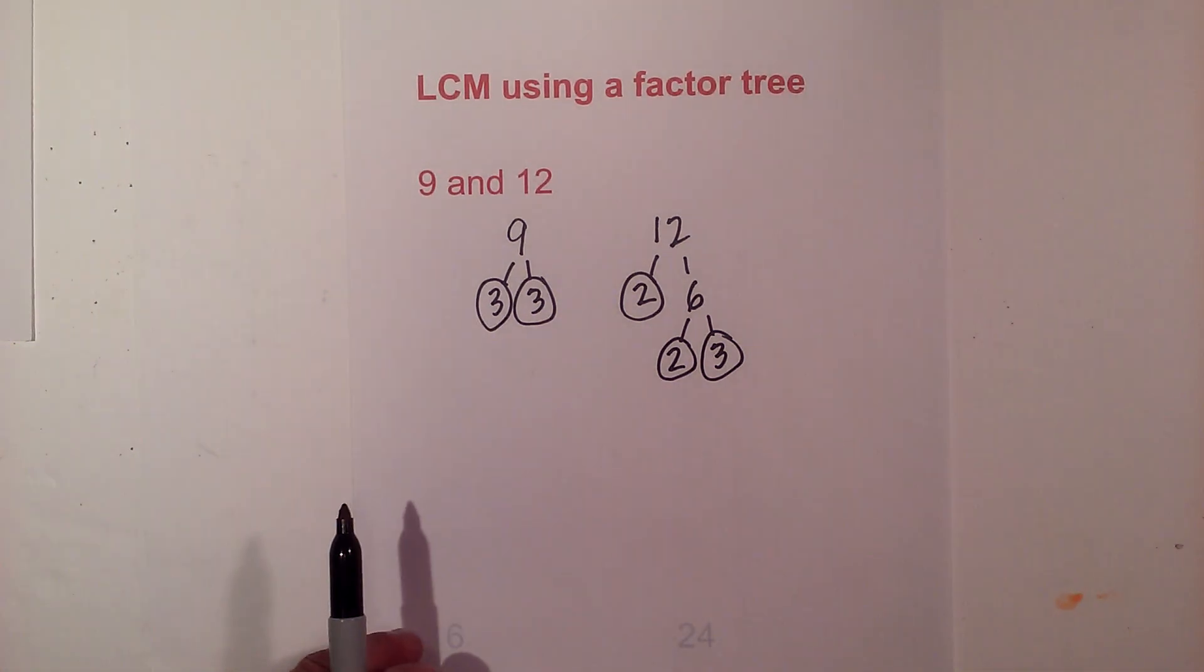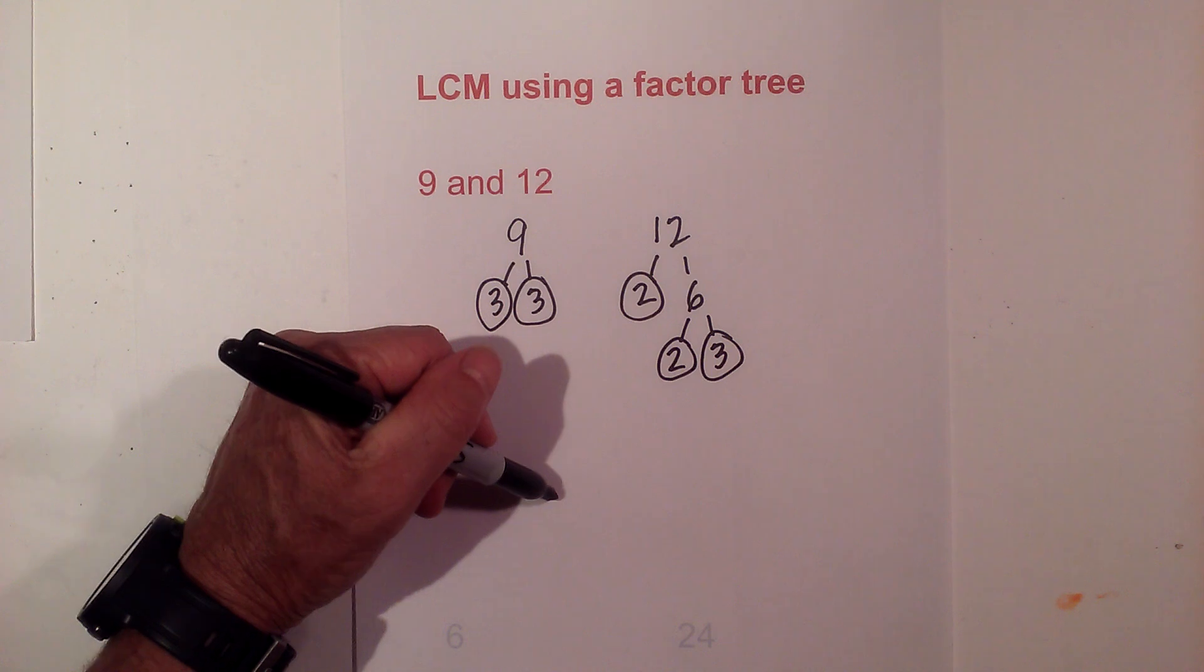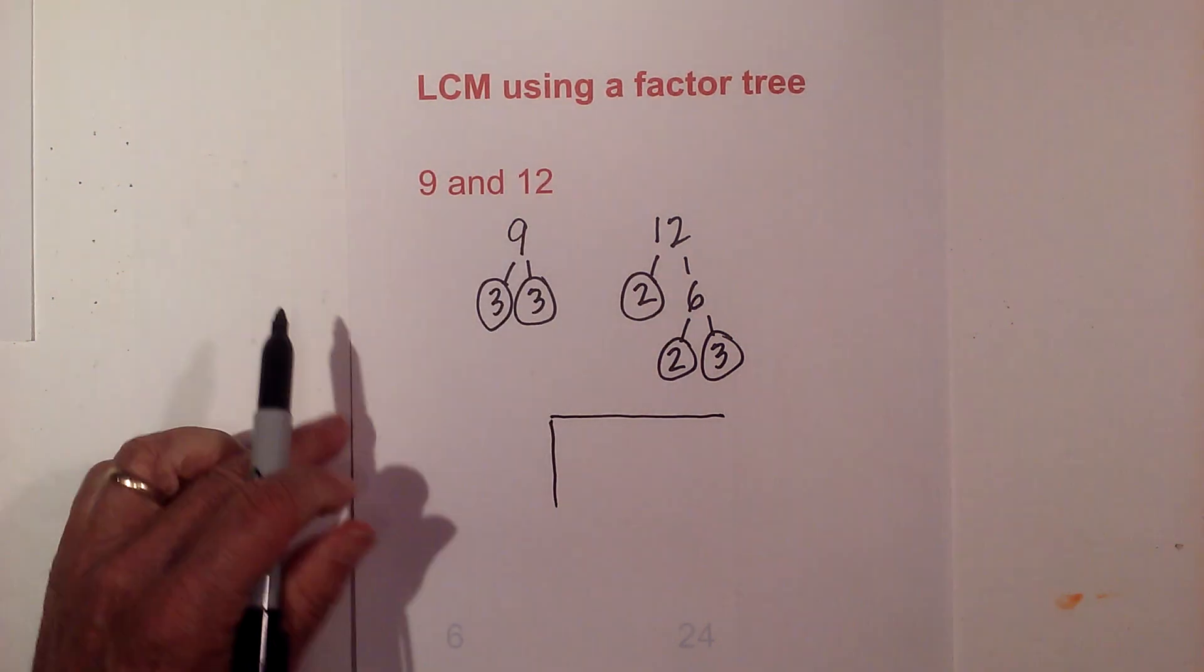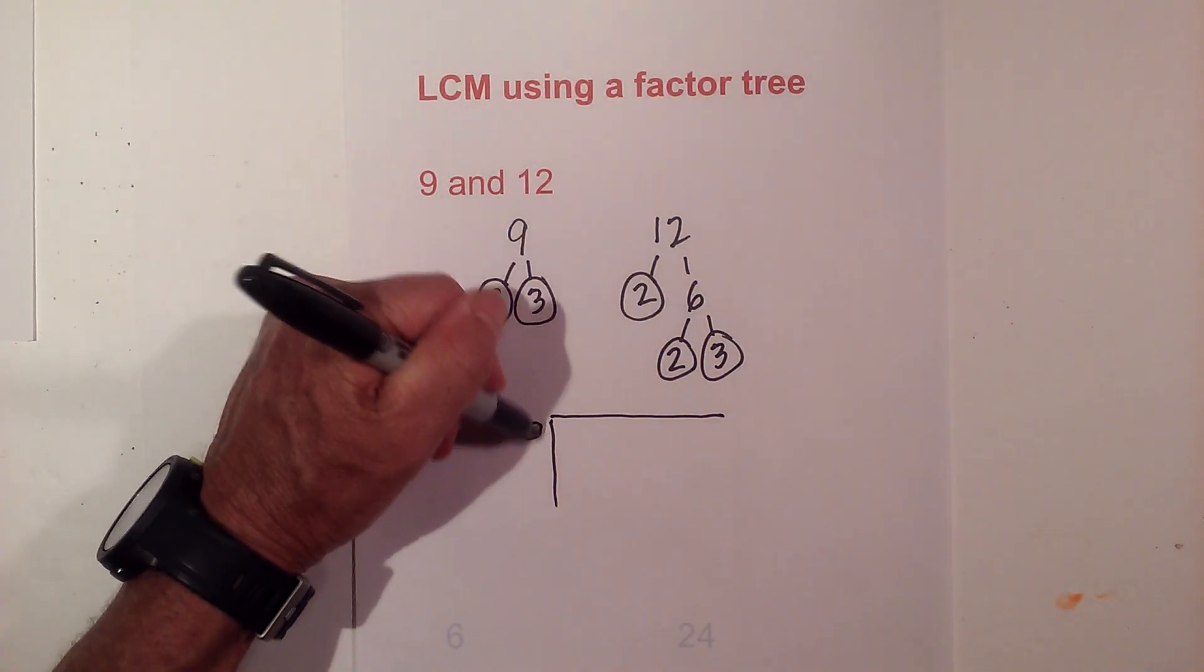So I now have all the prime numbers of both 9 and 12. I am now going to set up a prime factor chart just to cut down on the number of errors.